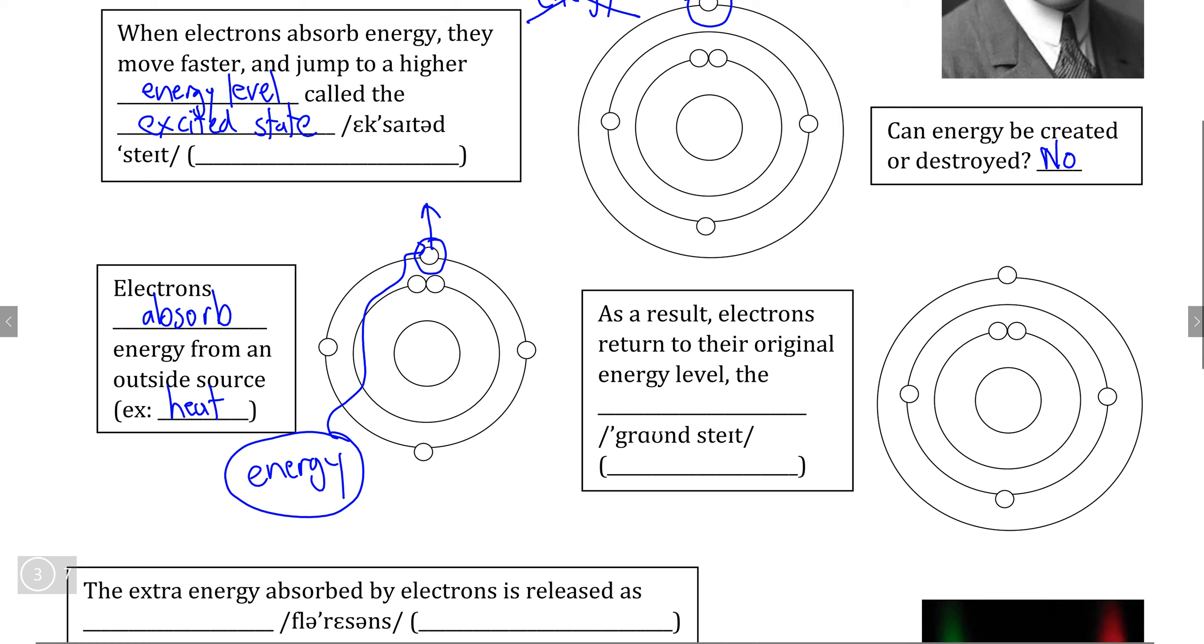He realized that when this electron returns to its original position in the valence shell, the energy that it absorbed must be released in some way, because this energy that the electron absorbed cannot ultimately be destroyed, so it must be released back into the environment when this electron returns to its original position.